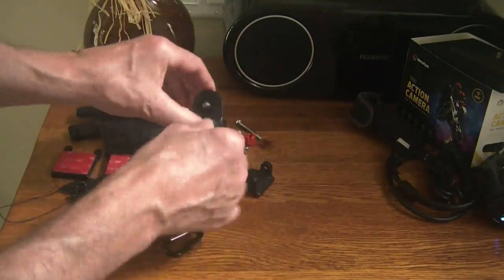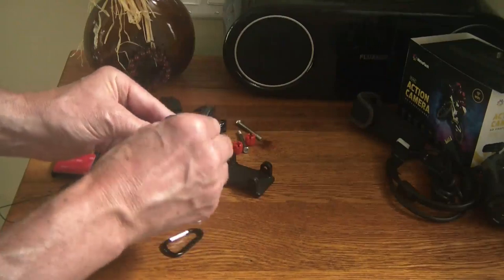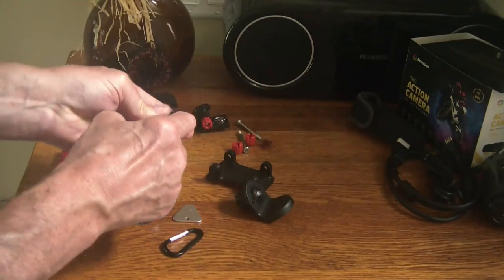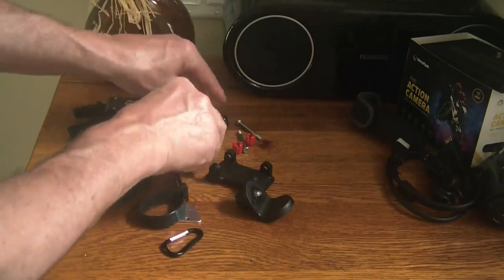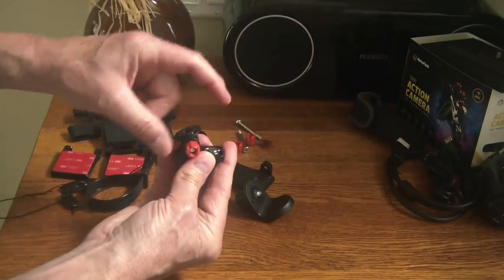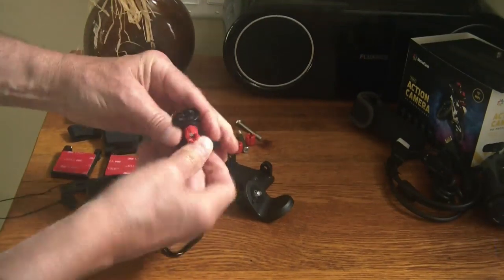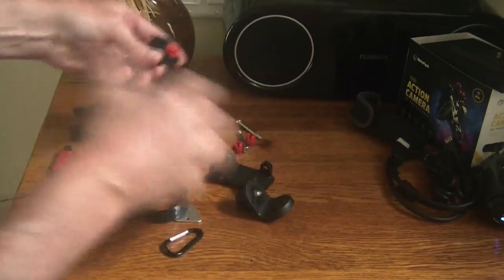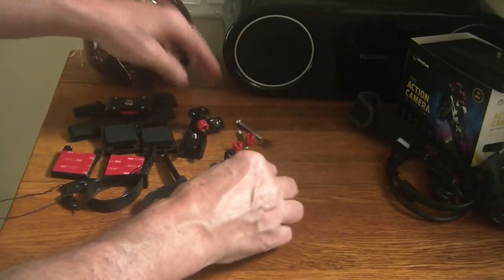You also get a couple extra things here. This is a 90 degree mount and then you get a quick release mount here and then you also get a tilting mount which once your camera is mounted you will be able to tilt your camera using this mount. So you can use a lot of these pieces together to get just exactly what you need.